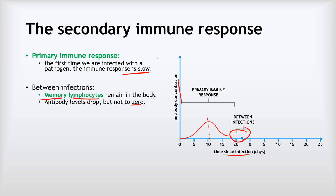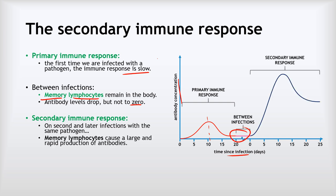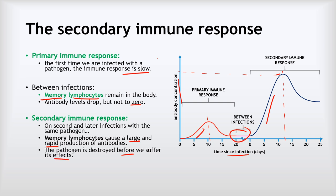Here's the really clever thing. Because we've got those memory lymphocytes remaining in the body, the second time we're infected with that pathogen, those memory lymphocytes cause a large and rapid production of antibodies. The antibody concentration peaks at a much, much higher level than before, and the gradient of the line is steeper — meaning we make those antibodies much faster. Together, this means we can make enough antibodies to destroy the pathogen before we suffer its effects. We aren't made ill because we destroy it quickly, and at this point we say we have immunity to the pathogen.